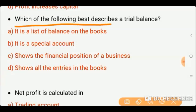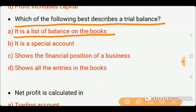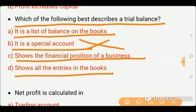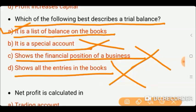Next question: Which of the following best describes a trial balance? Options: it is a list of balances on the books, it is a special account, it shows the financial position of a business, or it shows all the entries in the books. The trial balance is not a special account and does not show financial position — the final accounts do that. The trial balance shows the list of balances from the books. So option A is correct.